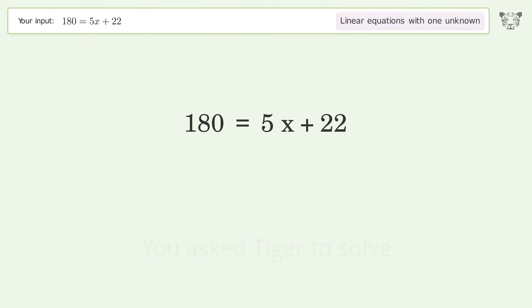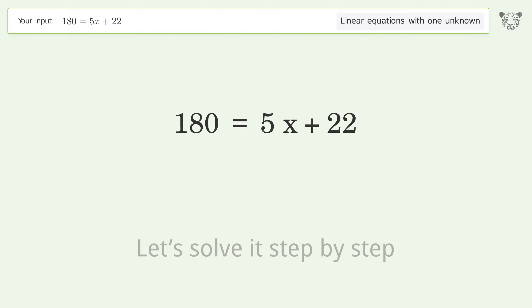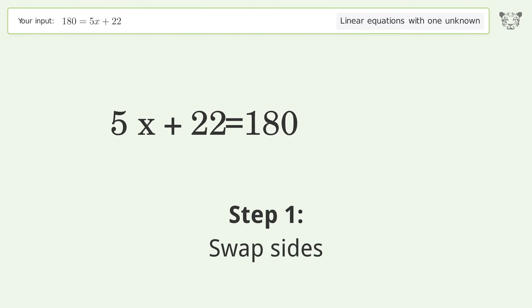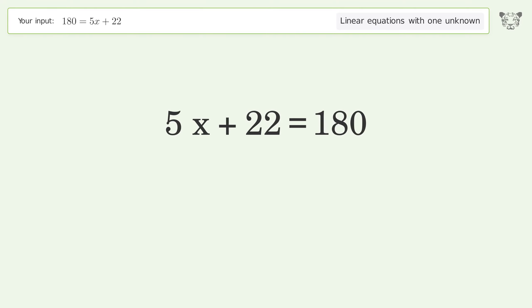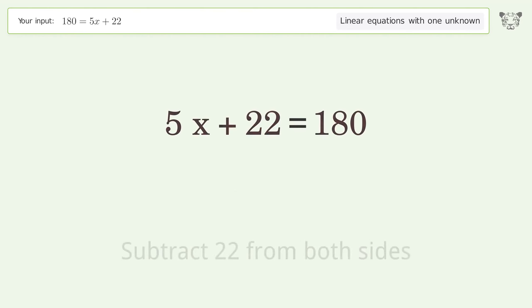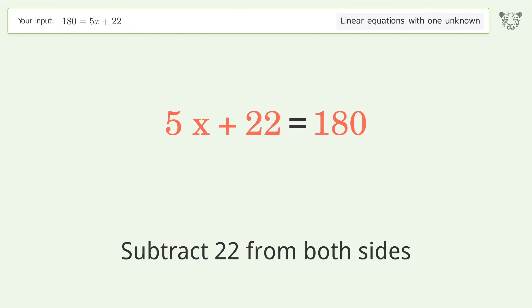Tiger solves this linear equation with one unknown. The final result is x equals 158 over 5. Let's solve it step by step: swap sides and group all constants on the right side of the equation.